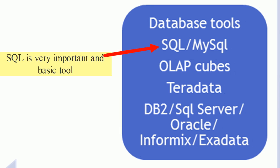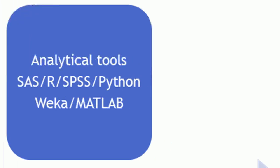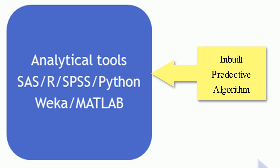For the second quadrant, analytical tools like SAS, SPSS, Python, Weka, and MATLAB all have inbuilt predictive algorithms, and are considered conventional tools for data analytics. However, there are some situations where analysis is not possible on conventional computing tools, because the data might not always be structured, or heavy cleaning of the raw data might be required. That is where the third quadrant of big data tools comes into the picture.